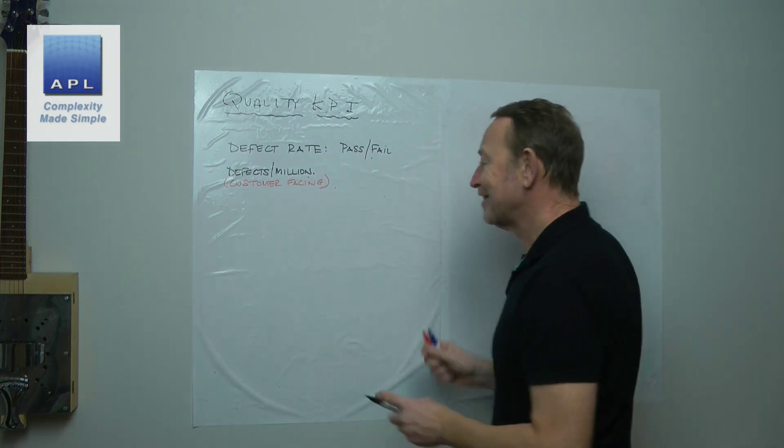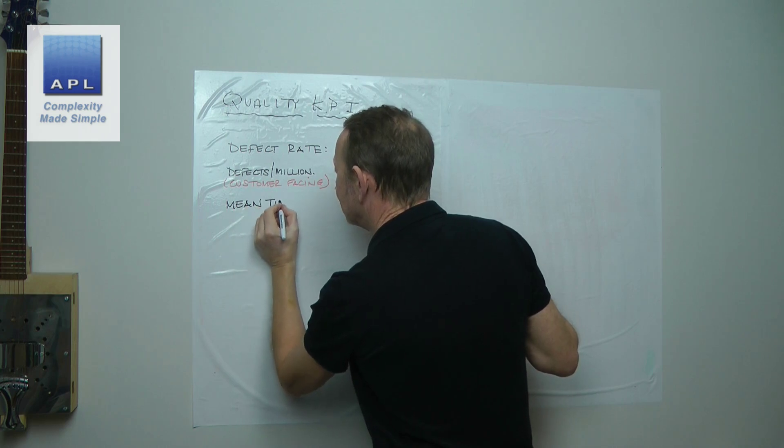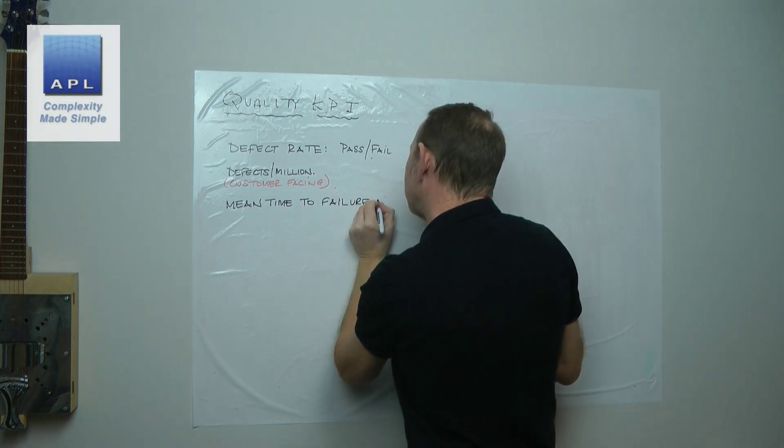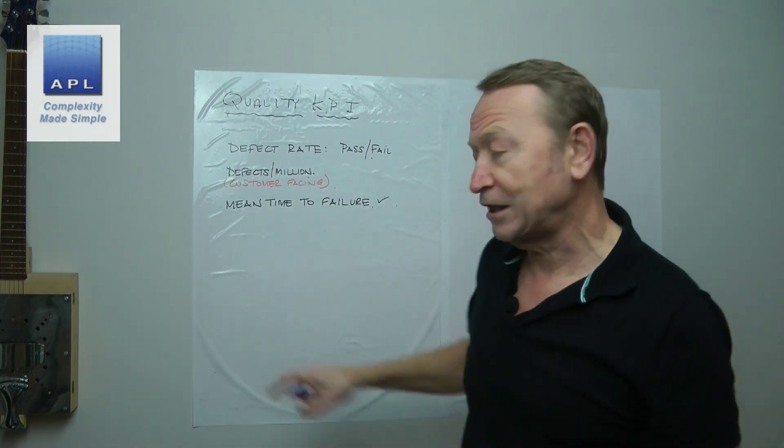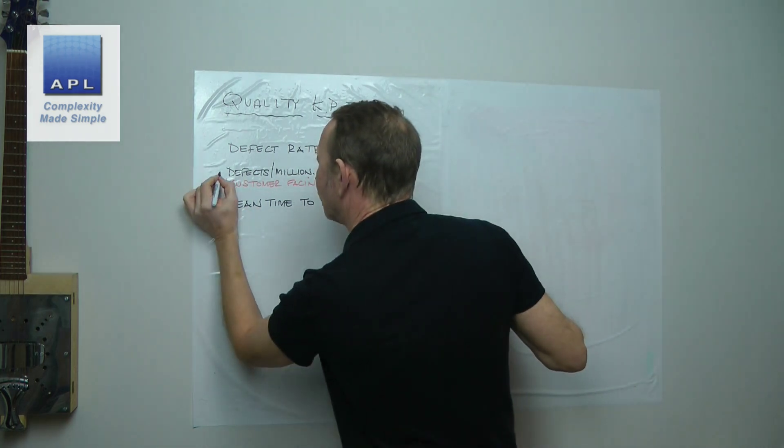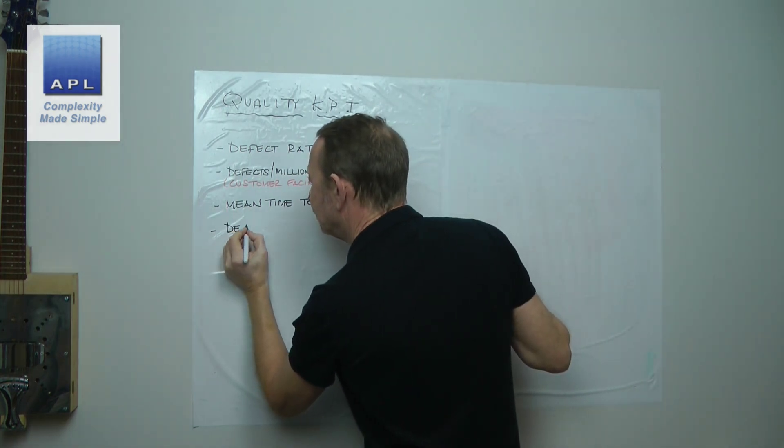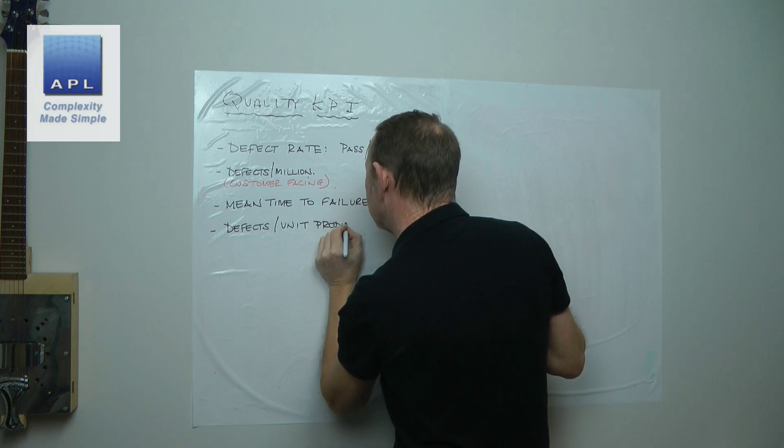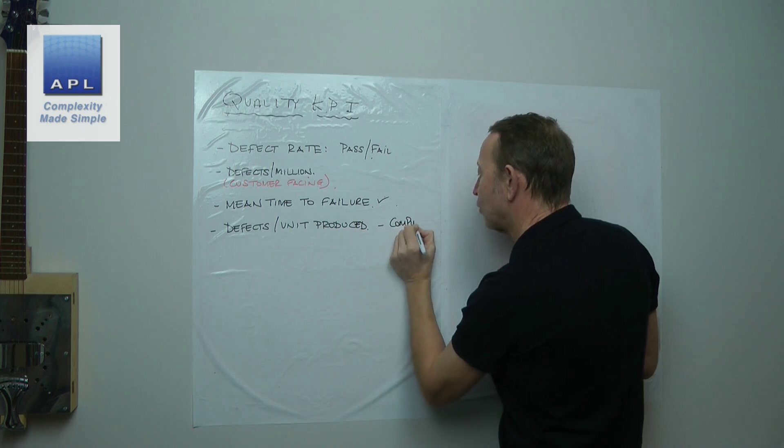The next one, and this is the one I'm going to recommend for low volume, is meantime to failure. We'll come back to meantime to failure in a second. I'm going to suggest replacing this with this in low volume. And finally, the last one, and this is for complex products, is defects per unit produced.